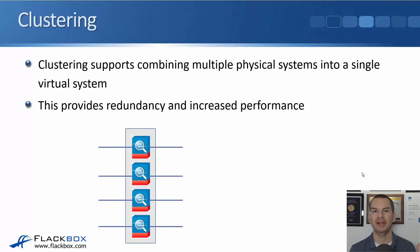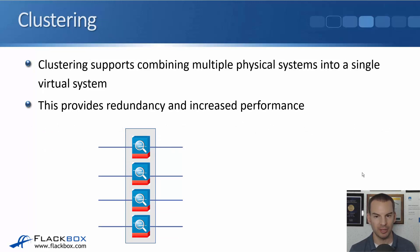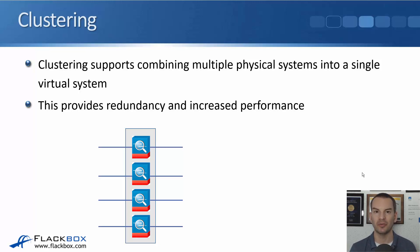One more topic to cover is clustering, which is kind of the opposite of virtualization. Virtualization runs multiple virtual systems on one physical system; clustering combines multiple physical systems into a single virtual system. For example, four physical ASA firewalls can be configured to operate as one single firewall. This provides redundancy — if any one of the four fails, the other three keep running — and it increases performance because you now have four times the throughput. That's it for virtualization; next lecture we'll get back into cloud computing.